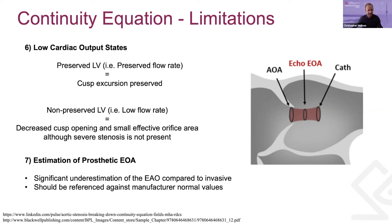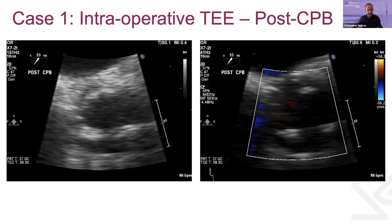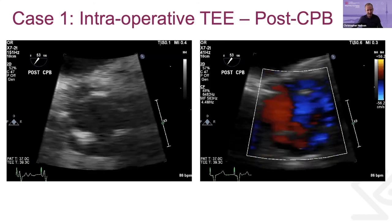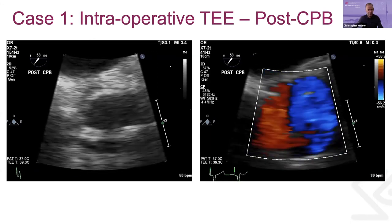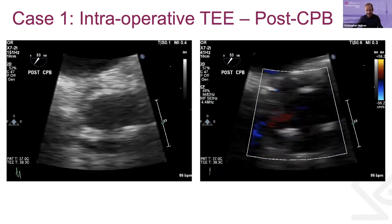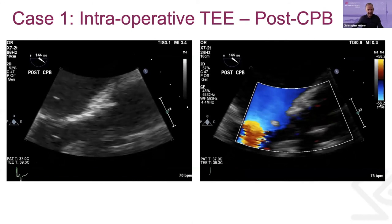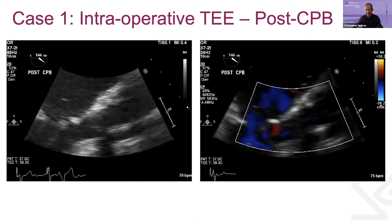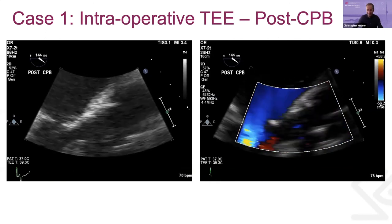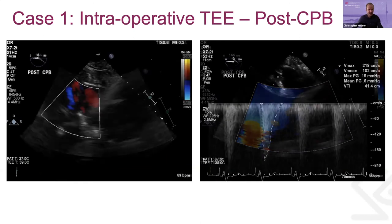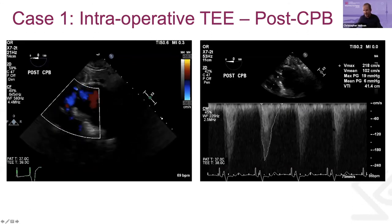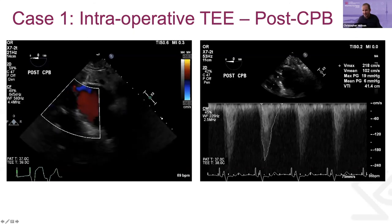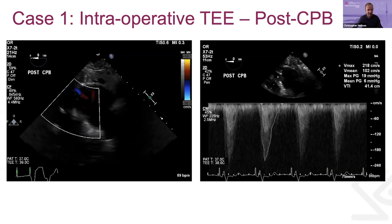Continuing with post-op images from case one. What you see here is a bioprosthetic valve. You're looking for rocking, making sure the valve is well seated, and looking for transvalvular and paravalvular leaks — all of which look normal. The long axis view shows the same: no leaks and the valve appears to be opening and closing well. The post-op gradient through the valve shows a normal gradient across the bioprosthetic valve.